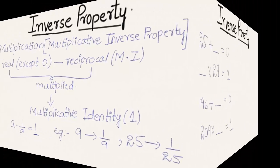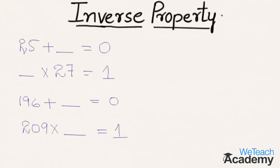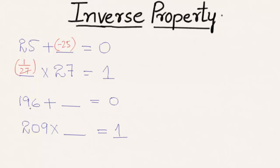Now let us see a few more examples. In the first example, 25 is added to a number to get 0, which is the additive inverse. The opposite of 25 is minus 25, so minus 25 is added to 25 to get 0. In the next example, seeing the multiplication sign, the multiplicative inverse of 27 is 1/27, and multiplying 1/27 with 27 gives the multiplicative identity 1. In the third example, the opposite of 196 is minus 196, which is added to get the result 0.